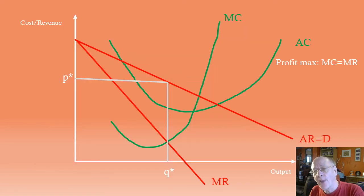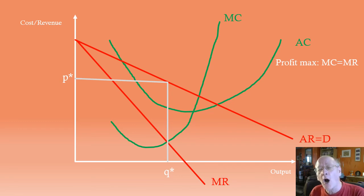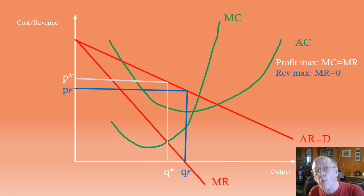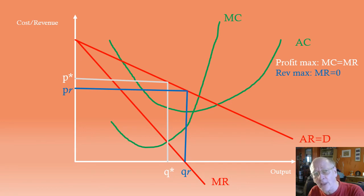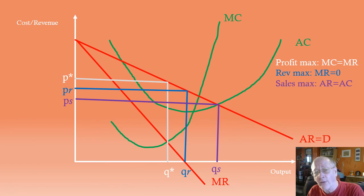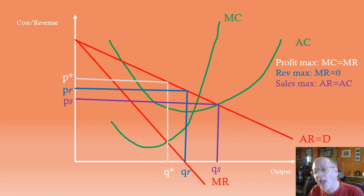Typically on a question, you are asked to compare the position of a profit maximiser with one of the other objectives. So we need to start with the profit-maximising quantity and price. The conditions for profit maximisation are marginal cost equals marginal revenue — we get the price from the demand curve, the average revenue curve. If we're asked to compare with revenue max, the conditions for revenue max are MR equals 0, and again, to find the price, you follow that up to the demand curve. You can see that the revenue maximiser will sell a higher quantity at a lower price than the profit maximiser. If we compare the sales maximiser with the profit maximiser, we're looking for the sales max condition where AR equals AC. And again, the sales maximiser sells a higher quantity at a lower price than the profit maximiser.